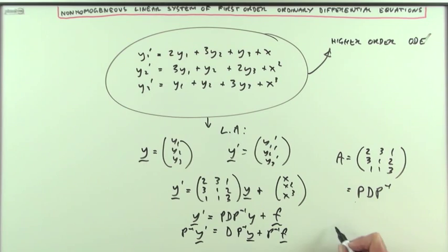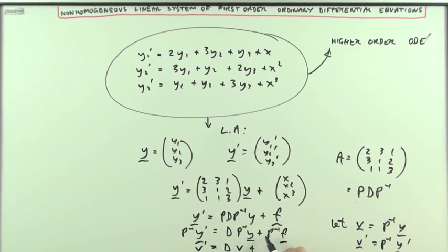Carry a substitution: let some other vector V equal inverse of P Y, so that V dashed would be inverse of P Y dashed, and I would have V dashed equals D V plus that vector of X.